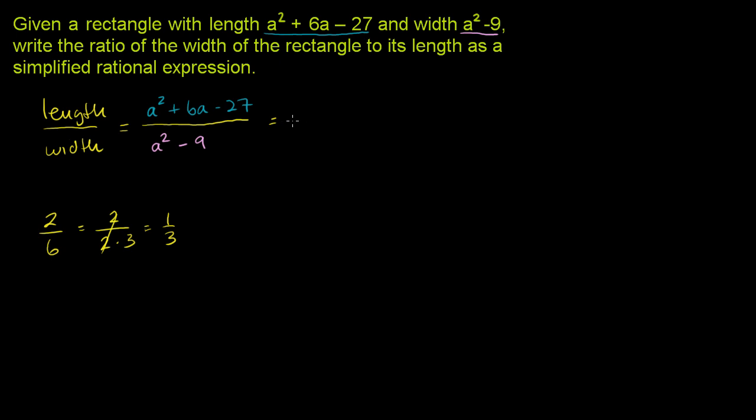Let's factor this numerator. A squared plus 6a minus 27. Can we think of two numbers that multiply to get negative 27, so they're different signs, and add to get positive 6? 9 minus 3 is 6, and 9 times negative 3 is negative 27. So this is a plus 9 times a minus 3.